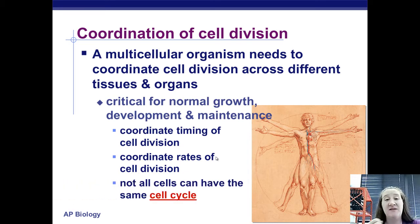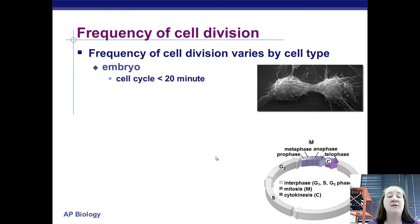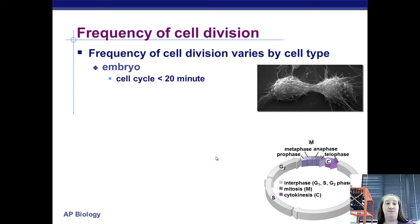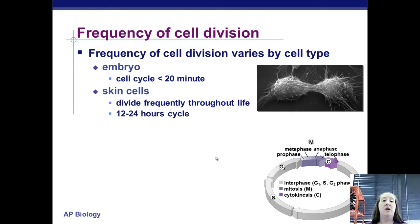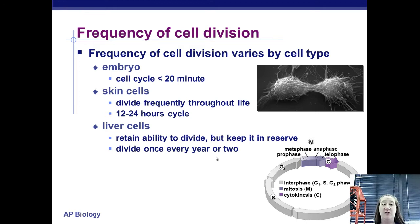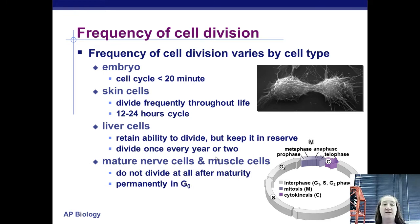Not all types of cells have the same length of cell cycle. Different types of cells divide at different times. In an embryo, the cell cycle happens less than every 20 minutes because you go from one cell to billions of cells in a very short period of time. As an adult, your skin cells divide the most frequently, with a cell cycle of only 12 to 24 hours. Liver cells retain the ability to divide, moving into G0 phase and back out if necessary, dividing once every year or two. Mature nerve cells and muscle cells never divide — once they hit maturity, they stay in G0 permanently.